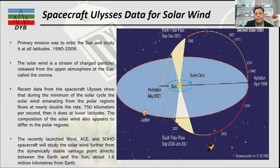Many analyses have been done using spacecraft. Today we are going to discuss the spacecraft called Ulysses, which collected data on the solar wind. The primary mission of Ulysses was to orbit the Sun and study it at all latitudes.